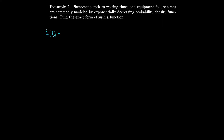Phenomena such as waiting times and equipment failure times are commonly modeled by exponentially decreasing probability density functions. For example, if you're waiting on hold, it's impossible for the agent to answer before the call is placed, so f of t must equal 0 for negative time. For positive time it's some constant a times e to the minus ct, where c is a positive constant. This gives us a piecewise probability density function where a and c are positive constants.